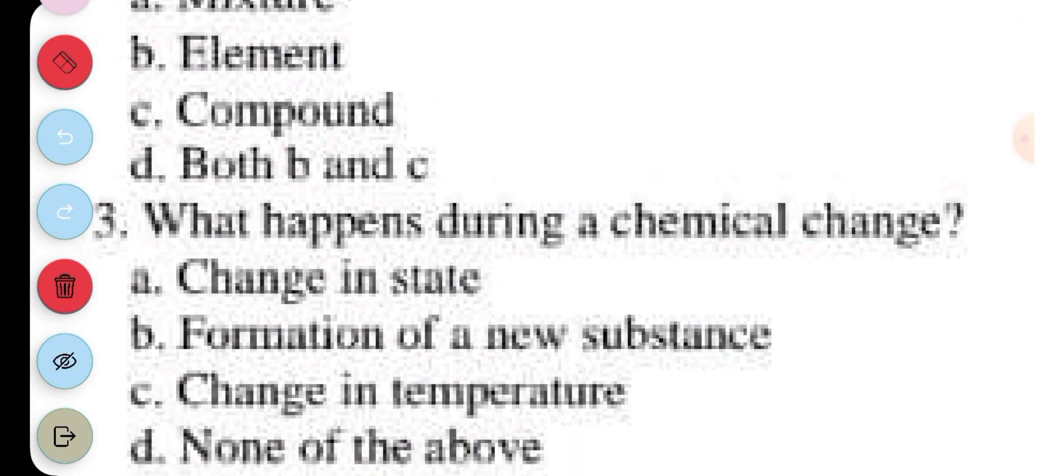Question 3. What happens during a chemical change? A. Changing states, B. Formation of a new substance, C. Changing temperature, D. None of the above. The answer to question 3 is B. Formation of a new substance.